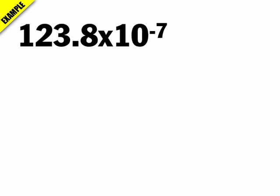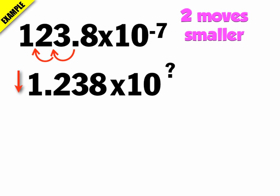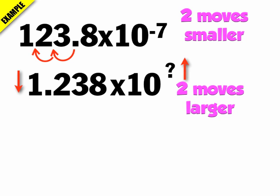Let's look at a number already in exponential notation and convert it to proper scientific notation: 123.8 times 10 to the negative 7. I want to turn that into 1.238 times 10 to the something. Moving the decimal two places to get from 123.8 to 1.238 makes the mantissa two powers of 10 smaller, so the exponent must become two powers of 10 larger. But it's a negative 7 — making a negative exponent larger means the number gets less negative, so it goes to negative 5.